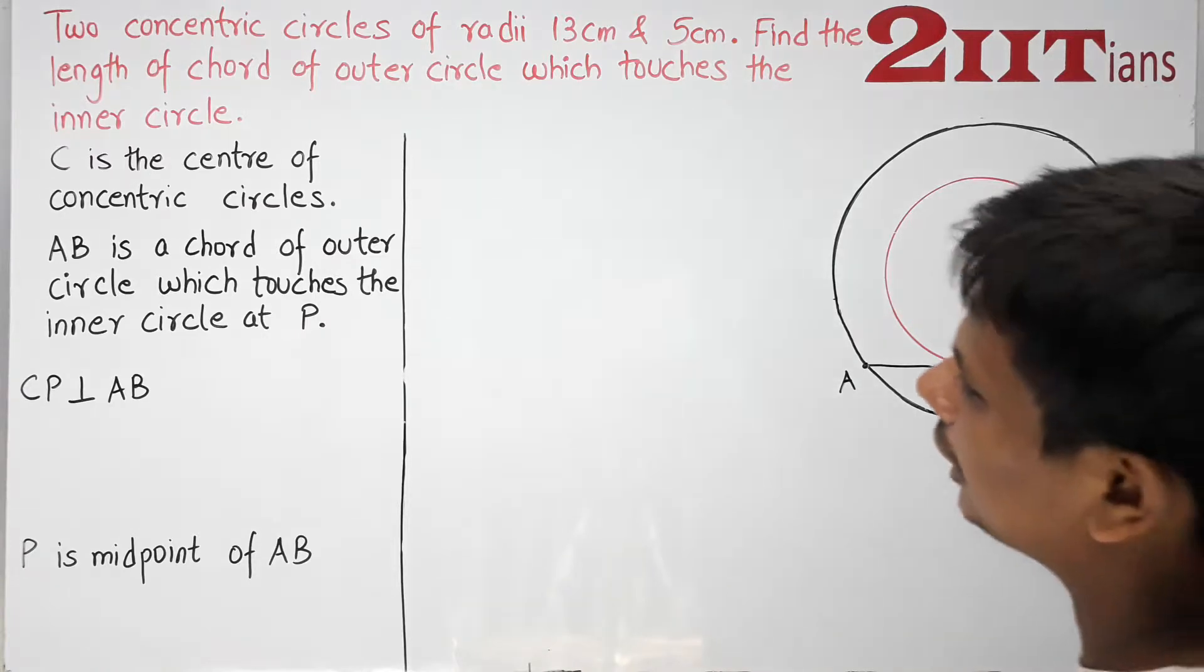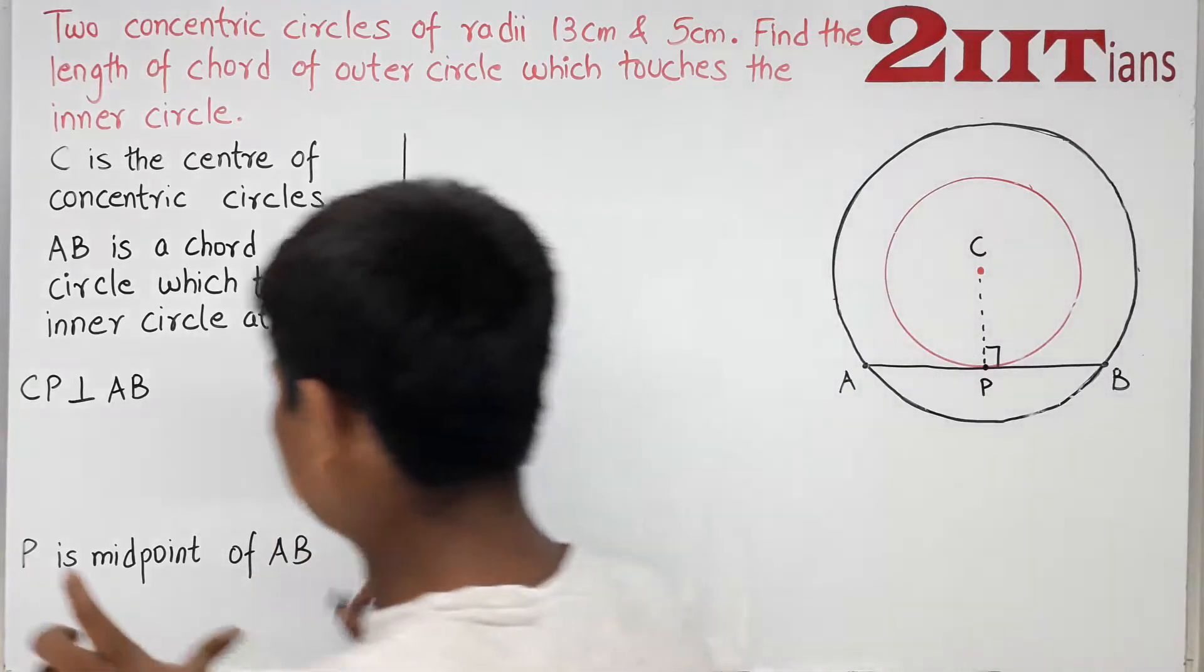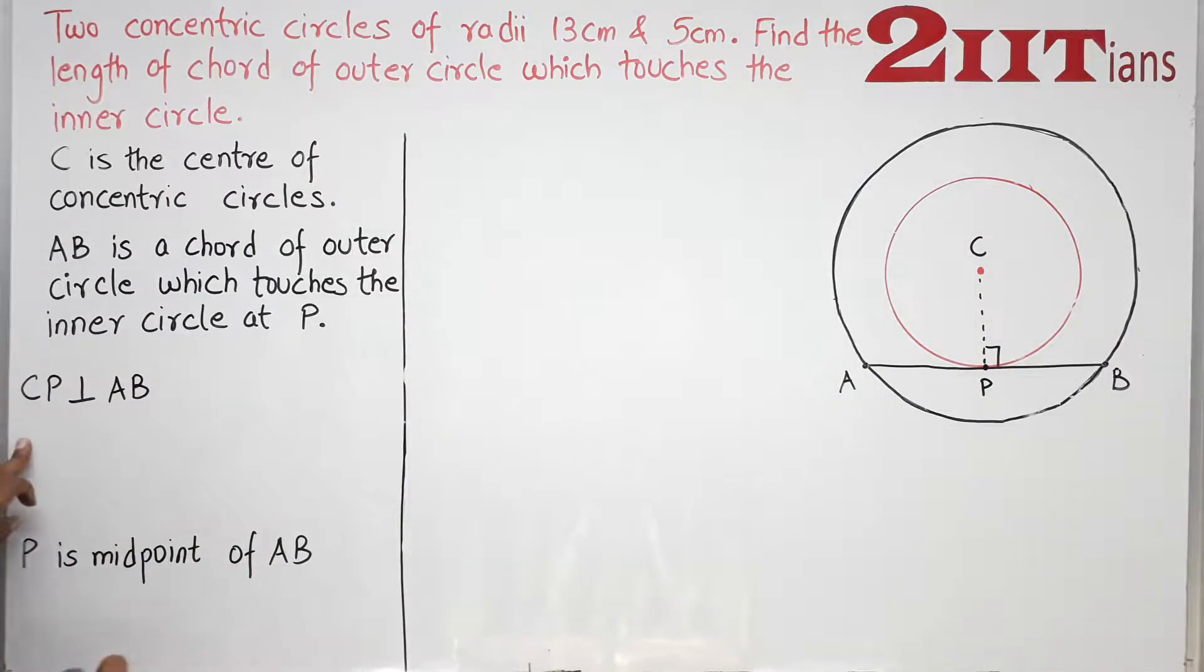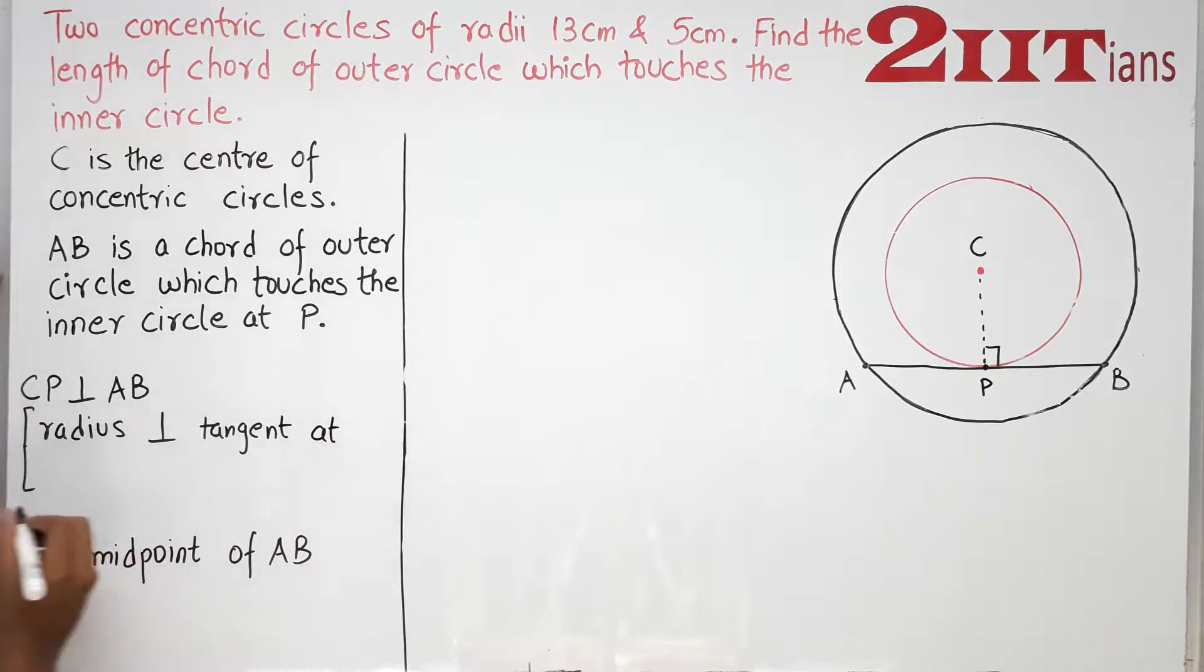CP is perpendicular to AB. P is midpoint of AB. The reason is that radius is perpendicular to tangent at the same point.